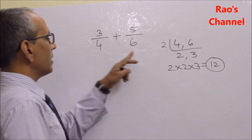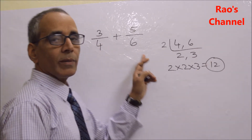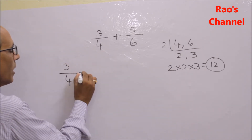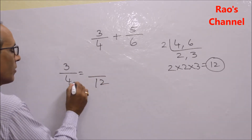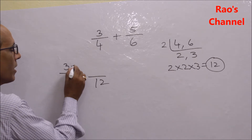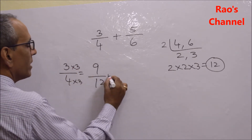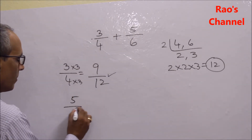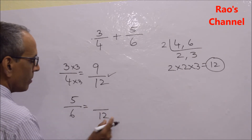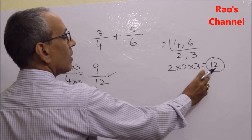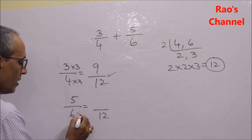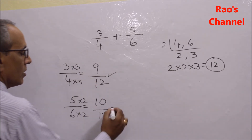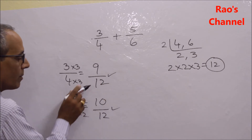I want 12 as the denominator for each fraction. For 3 by 4, to get denominator 12, I multiply by 3, giving 9 by 12. For 5 by 6, to get 12, I multiply denominator 6 by 2, so I also multiply numerator 5 by 2, giving 10 by 12. Now I have two fractions with the same denominator.